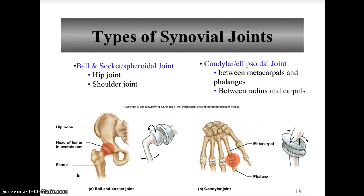This lecture is a continuation of articulations following the skeletal system. As a quick review, fibrous joints include syndesmosis, sutures, and gomphosis — these are synarthrotic and amphiarthrotic. Cartilaginous joints include synchondrosis and symphysis. Now we have synovial joints, which are all diarthrotic, meaning they permit free movement.